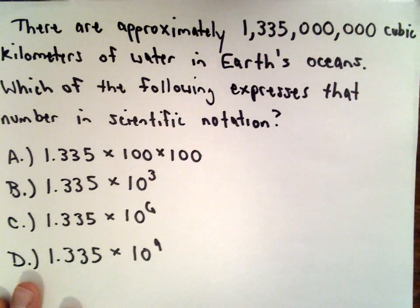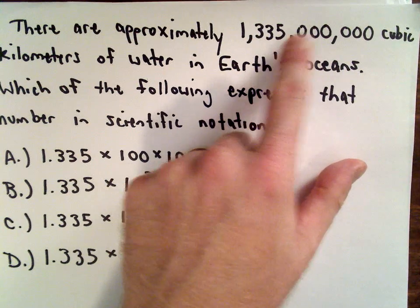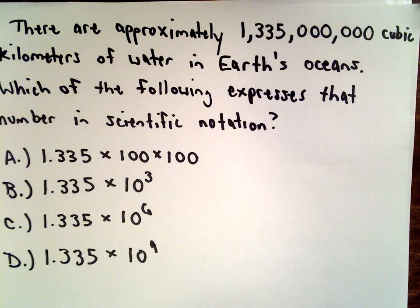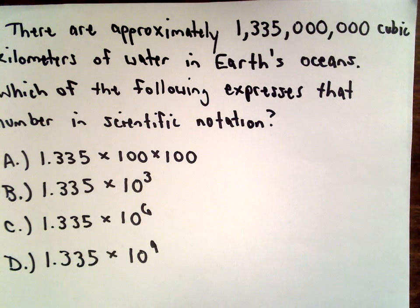There are approximately 1,335,000,000 cubic kilometers of water in the Earth's ocean. We want to know which of the following expresses that number in scientific notation.